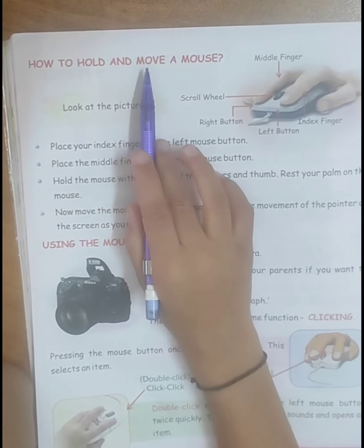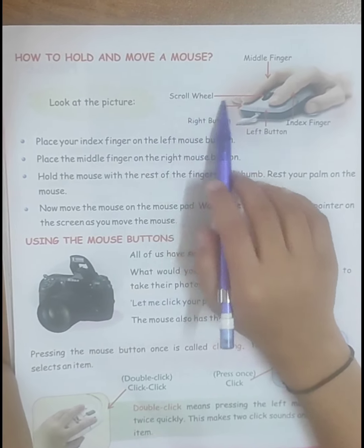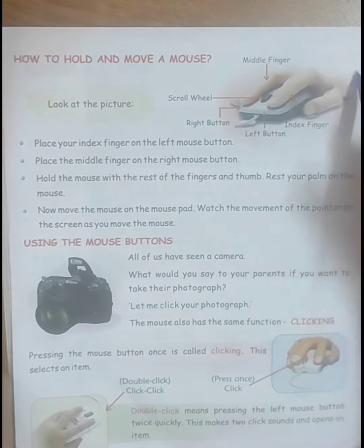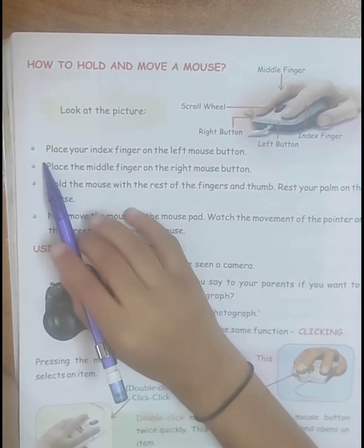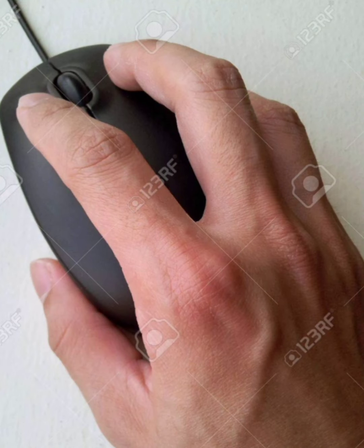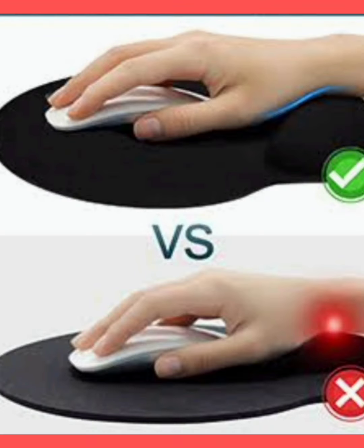How to hold and move a mouse? Look at the picture. Place your index finger on the left mouse button. Place the middle finger on the right mouse button. Hold the mouse with the rest of the fingers and thumb. Rest your palm on the mouse.